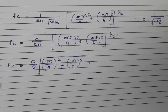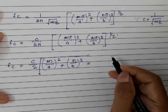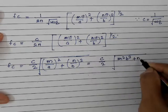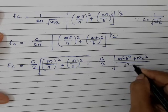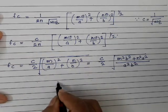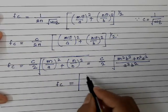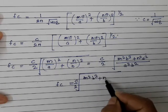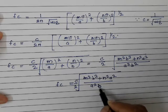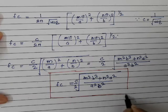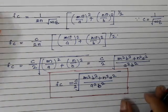Further solving: fc = (c/2) × √[(m²b² + n²a²) / (a²b²)]. So the cutoff frequency fc = (c/2) × √(m²b² + n²a²) / (ab). Now that we have the cutoff frequency, we are interested in the cutoff wavelength. The cutoff wavelength λc can be defined as λc = c/fc.